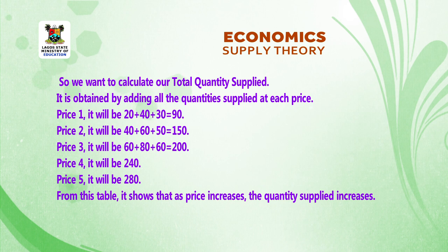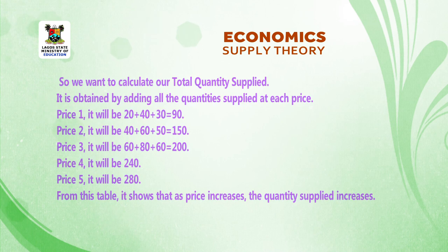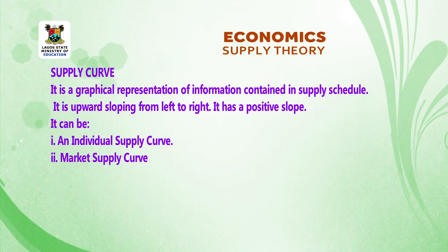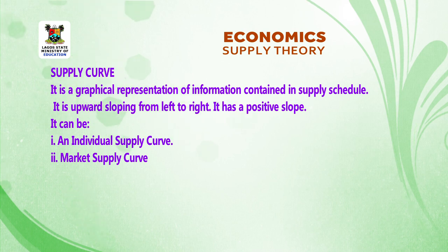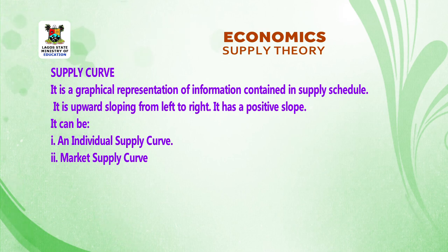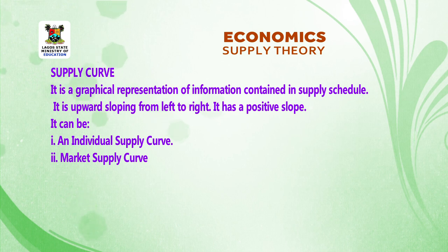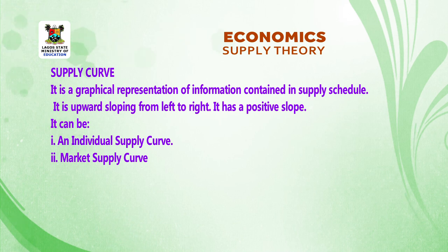Supply curve is a graphical representation of information contained in the supply schedule. It is upward sloping from left to right and has a positive slope. It can be an individual supply curve or a market supply curve.